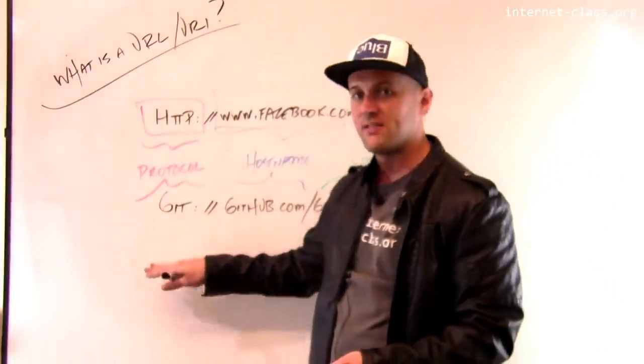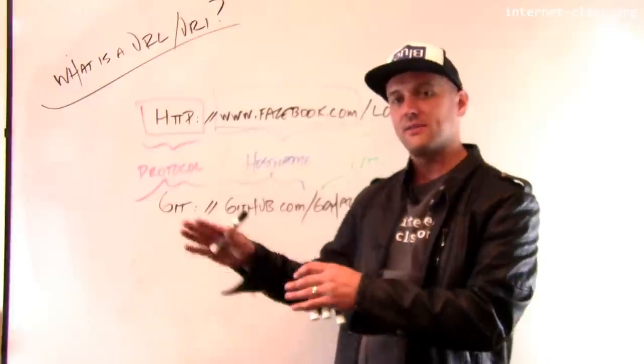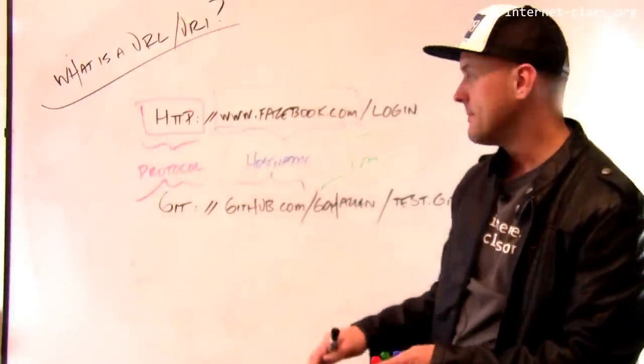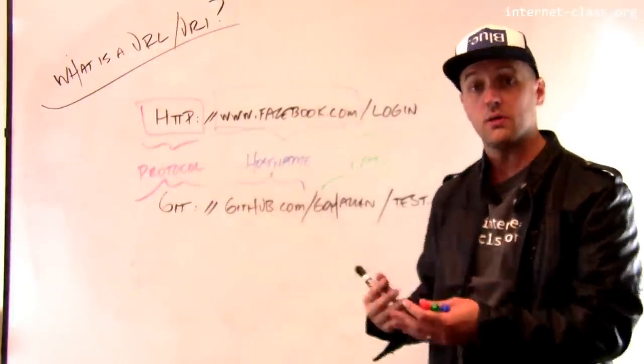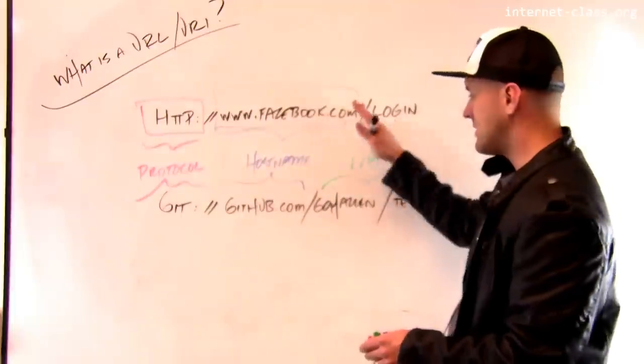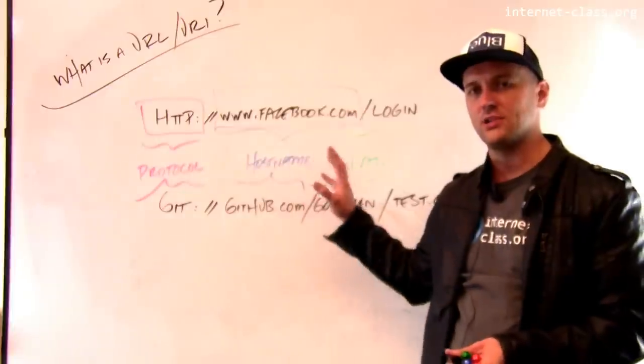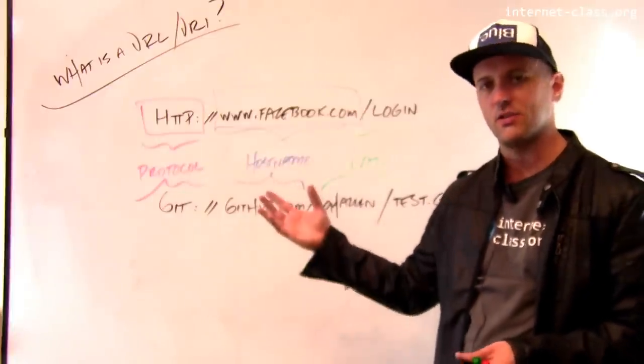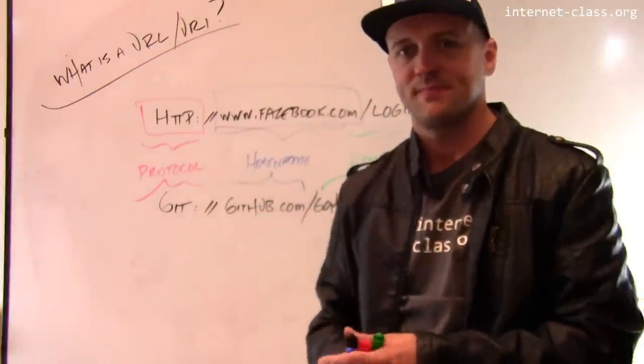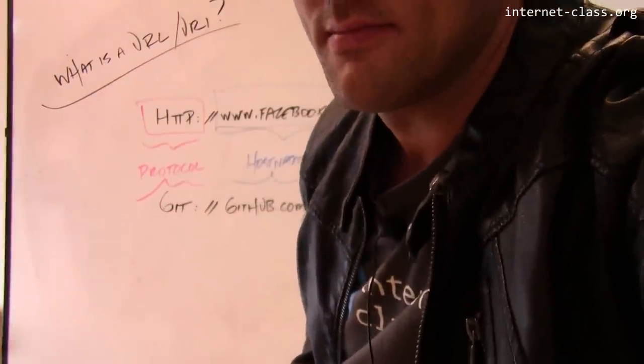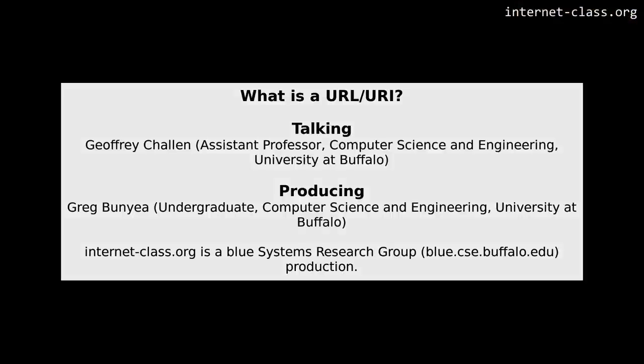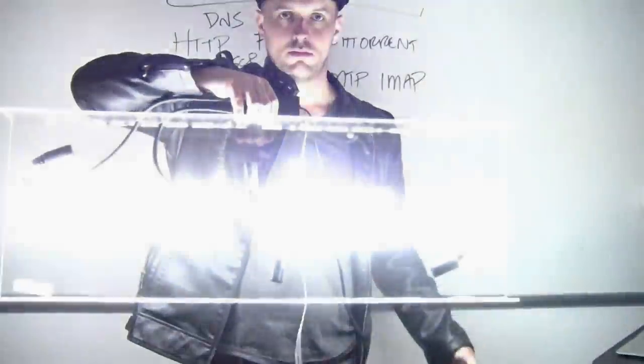You might see FTP, you might see SSH, there's lots of different protocols that can be in the front here. The host names look frequently pretty similar, and then the path has information that's frequently pretty specific to the actual application that's using the URI. But this is the structure of a URI. All right. Thank you.